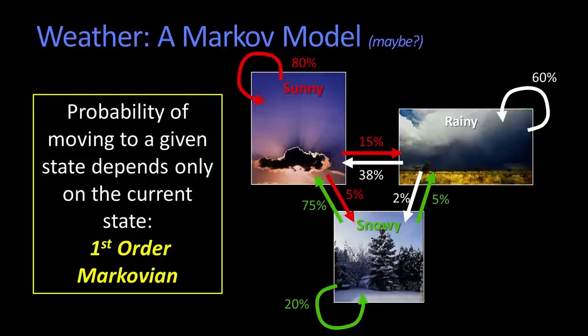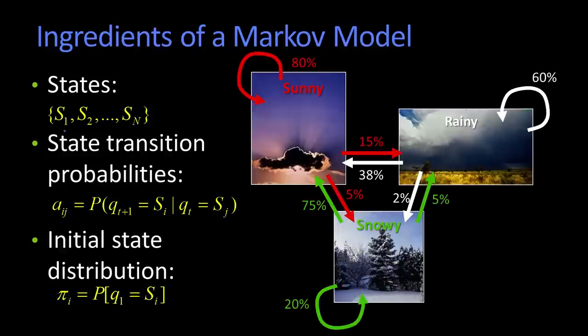All right, so the probability of moving, of being in a particular state, of getting to a state depends only on the state I'm currently in. In order to specify our Markovian model, we need a couple of things, right? So we need a set of states, and these are labeled here as S1 through SN.